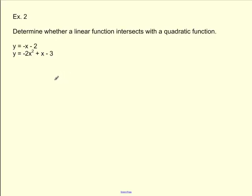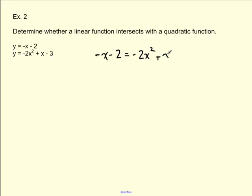The greatest thing we can use here is the quadratic formula approach. We know we're going to set these two things equal to each other. Just like before to find points of intersection, I'm going to set equation 1 equal to equation 2. So negative x minus 2 is going to equal negative 2x squared plus x minus 3.